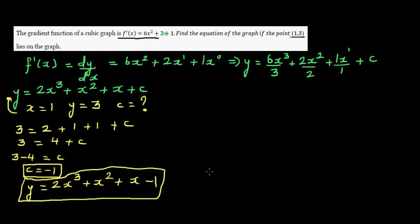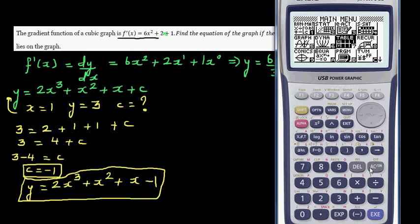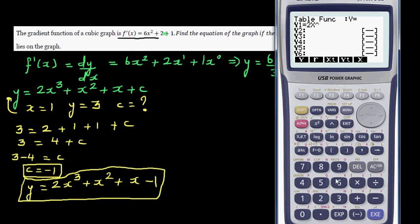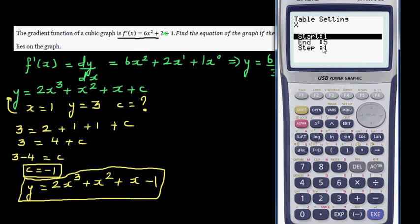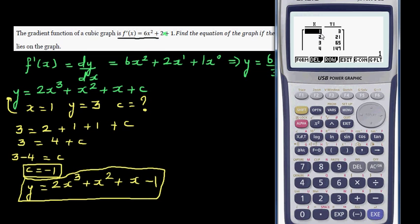To confirm your answer, if you have a graphic calculator, go to the table menu, delete any existing equation, and type in y = 2x³ + x² + x - 1. Check your settings — starting at 1 — and when x is 1, y should be 3. The table confirms y = 3, so your answer is right.